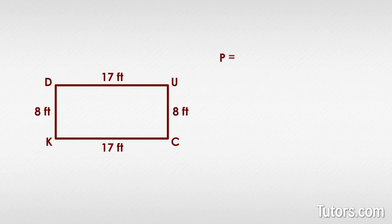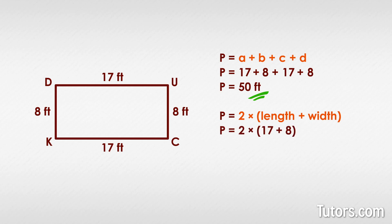Let's plug our numbers into the longer version of the formula first. This gives us P equals 17 plus 8, plus 17 plus 8, so our answer is P equals 50. Now let's try the other formula. P equals 2 times 17 plus 8. Remember, we always do the math in parentheses first.